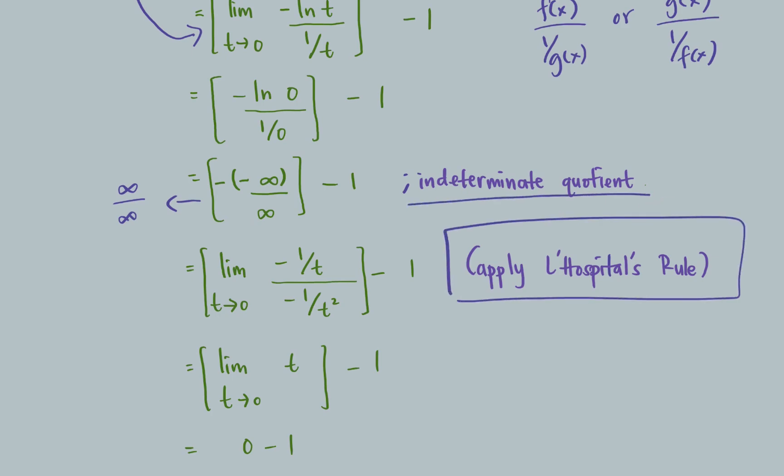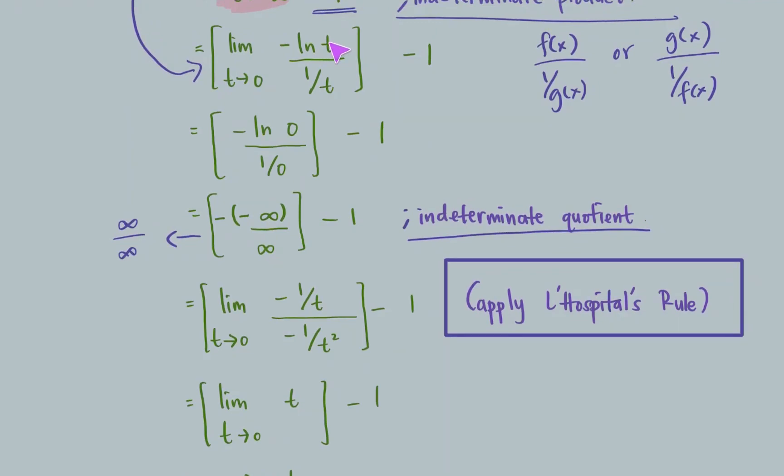Apply the L'Hôpital's rule by differentiating the numerator. Negative ln t is negative 1 over t, and then differentiate the denominator separately. 1 over t is negative 1 over t squared.